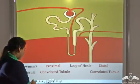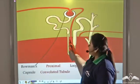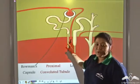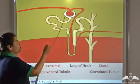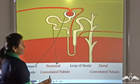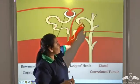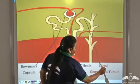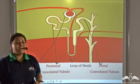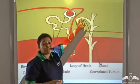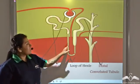Ultrafiltration takes place in the Bowman's capsule. Selective reabsorption of glucose, water and other nutrients take place in the proximal convoluted tubule, loop of Henle and the distal convoluted tubule. Tubular secretion of potassium and penicillin takes place in the distal convoluted tubule. The liquid formed is urine and it gets collected in this duct.